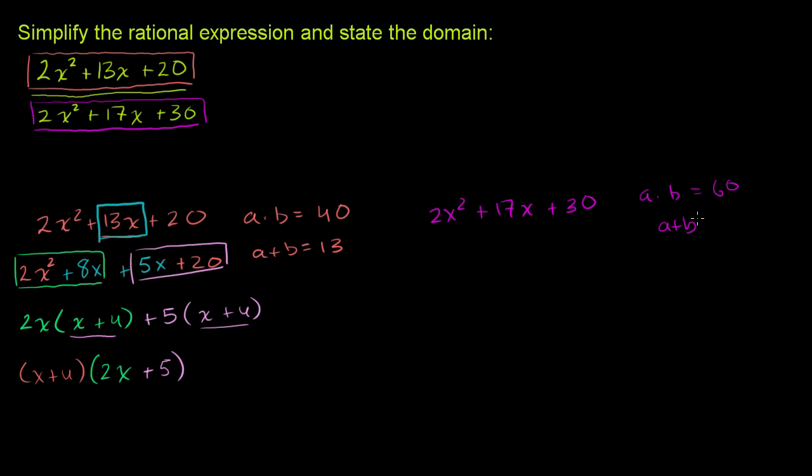And an a plus a b, when I add them, I get 17. And once again, let's see, 5 and 12 seem to work. So let's split this up into 2x squared. So we're going to split up the 17x into a 12x plus a 5x.